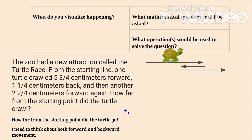Now I know my turtle went 5 3/4 centimeters forward first. Then he went backwards, so I'm going to need to subtract the amount he went backwards from how far he got, and I get 4 2/4.